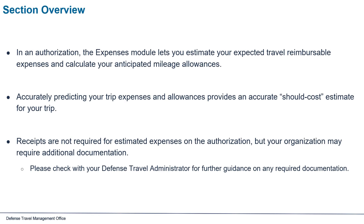In an authorization, the expenses module lets you estimate your expected travel reimbursable expenses and calculate your anticipated mileage allowances. Accurately predicting your trip expenses and allowances provides an accurate should-cost estimate for your trip. Receipts are not required for estimated expenses on the authorization, but your organization may require additional documentation. Please check with your Defense Travel Administrator for further guidance on any required documentation.